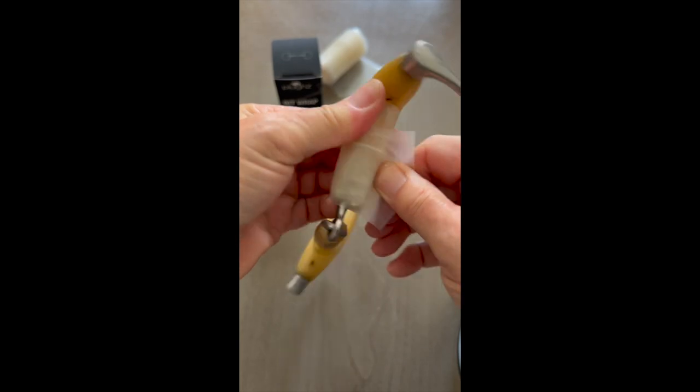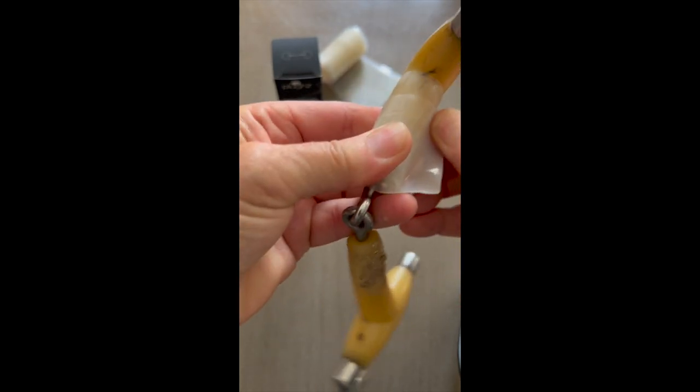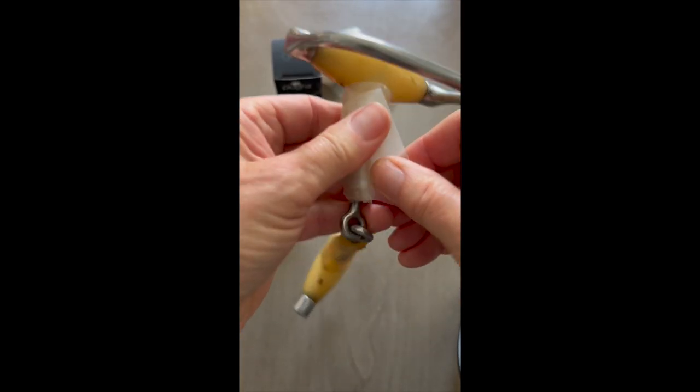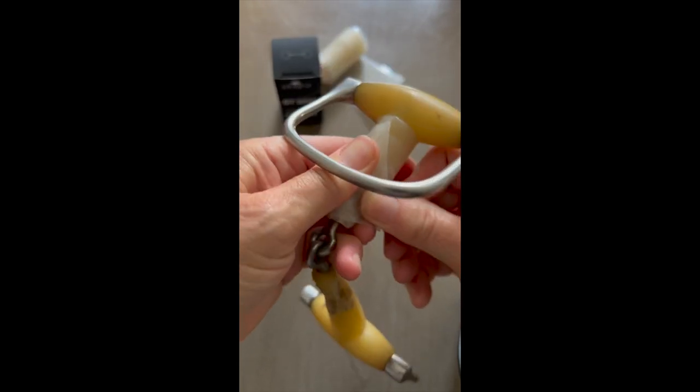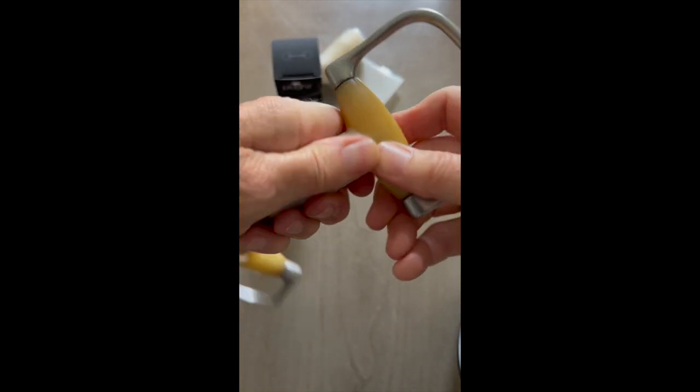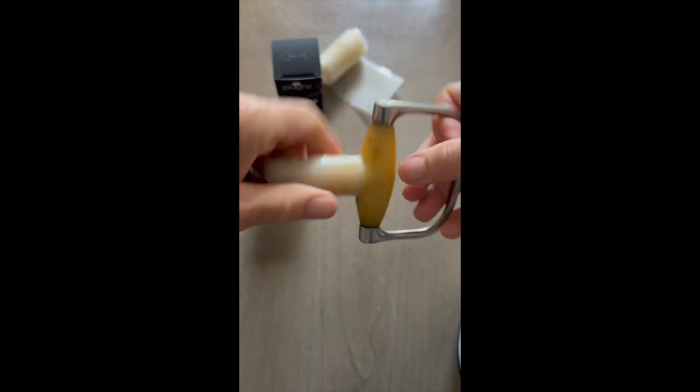Be sure not to create any creases and keep the wrap smooth and even. Once you've completed the side, be sure to use pressure to help the tape self-fuse. The warmth of your hand will also help in this fusing process.